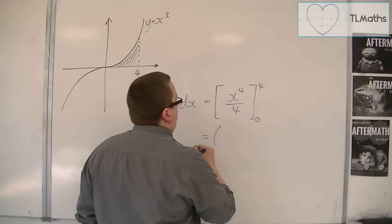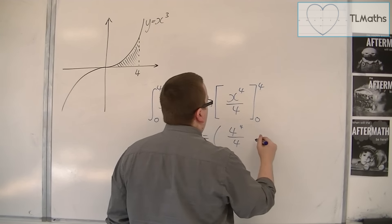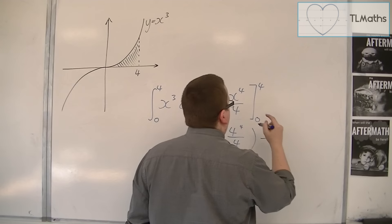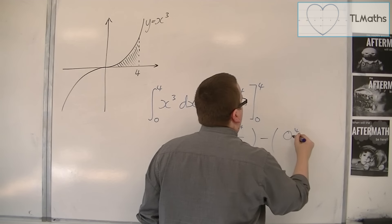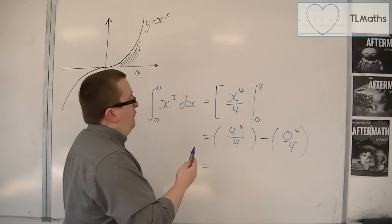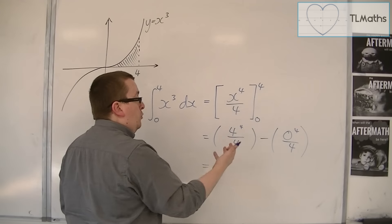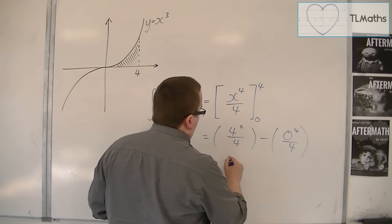We then substitute in the 4. So 4 to the 4 over 4, and then subtract, substituting in the 0. So 0 to the 4 over 4. So 4 to the 4 over 4 is 4 cubed, which is 64.